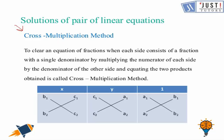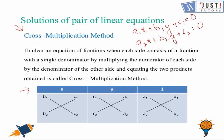Now we move ahead and learn about the cross multiplication method. This is another way of solving a given set of equations. If the equation is a1x plus b1y plus c1 equals 0 — that is, all variables and constants are on the left-hand side and only 0 is on the right — then we set up a table for x, y, and 1. For x, we write the coefficients of y and the constants: b1, b2, c1, and c2.